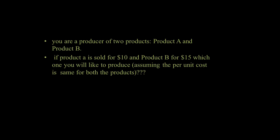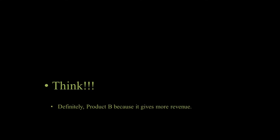The reason behind this negative effect on output is that sellers sell more at increasing prices and reduce their supplies at decreasing prices. For example, if you are a producer of two products — Product A and Product B — and Product A is sold for $10 while Product B is sold for $15, which one will you prefer to produce? Definitely Product B, because it gives more revenue.